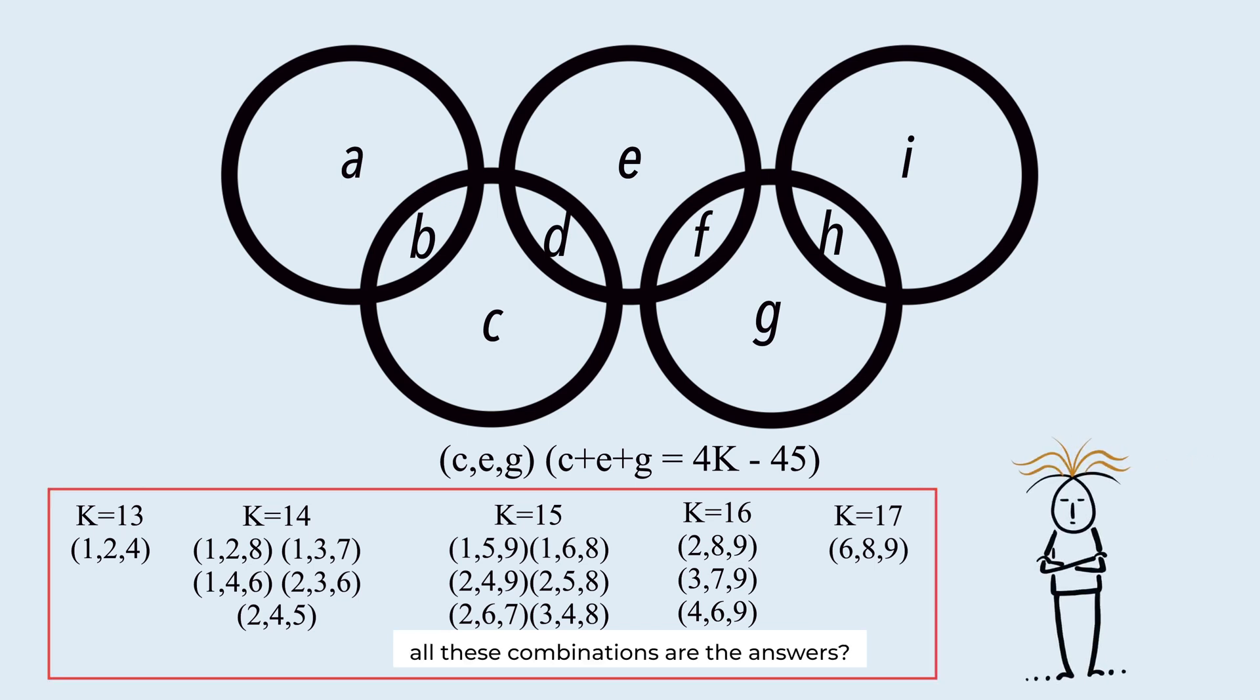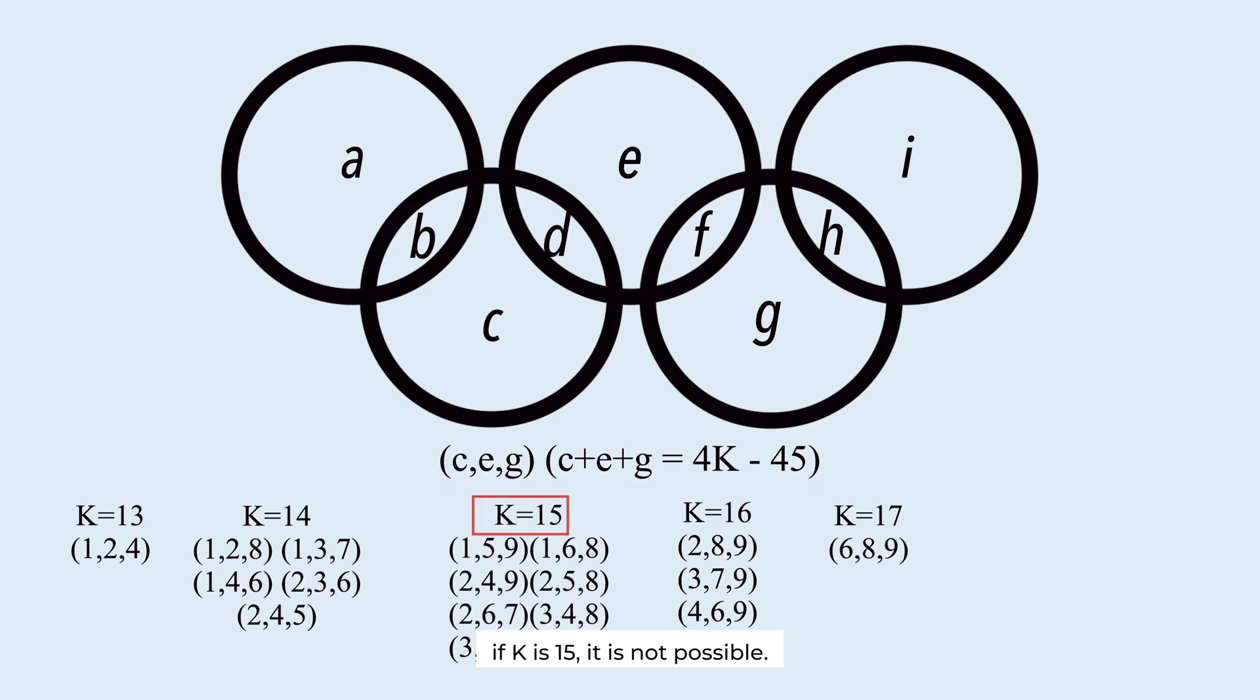All these combinations are the answers? Not necessarily. If K is 15, it is not possible. Since the sum must be 15, if E is 1, this must be 9. The numbers are duplicated. If E is 5 or 9, it is the same. So this case is not the answer.